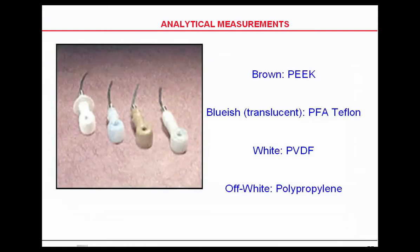This is the toroidal conductivity. You've got peat, Teflon, PVDF, and polypropylene, and you would select those to go with your applications — whichever one is most compatible.